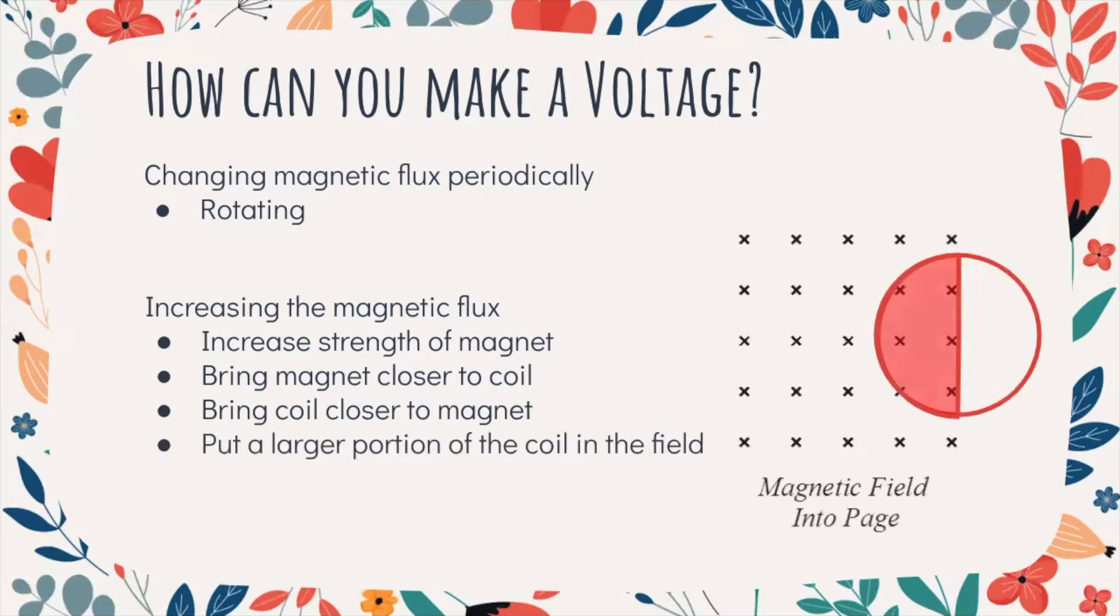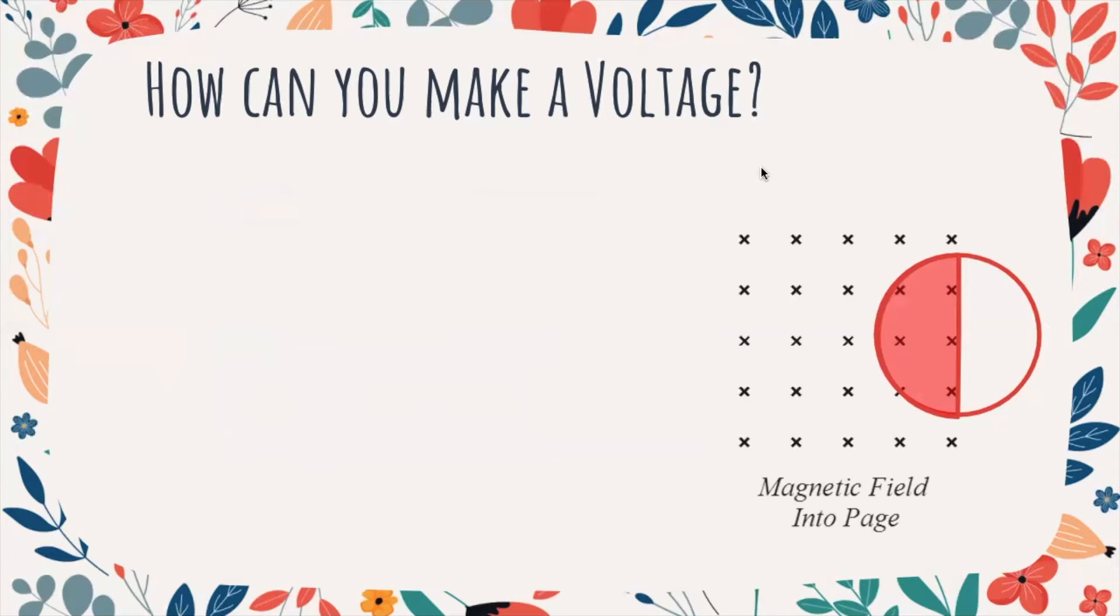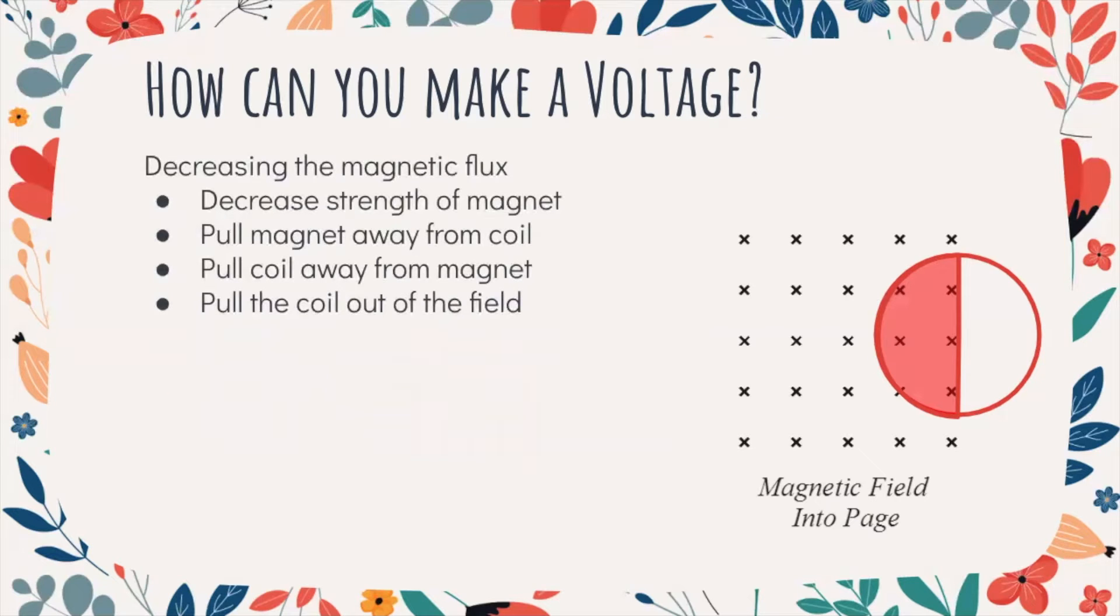When you put a larger portion of the coil in the field, imagine you're taking this coil and moving it to the right. So now it goes from having half a circle's worth of flux to a whole circle's worth of flux. That would make more flux and create a voltage, because your flux increased. But same thing happens. If you can increase the magnetic flux and create a positive voltage, if you decrease the magnetic flux, you make a negative voltage. Which you can do by any of the opposite means. So bring the coil farther away, bring the magnet farther away, make the magnet weaker. Pull the coil out of the field. So instead of the coil being half in, if I put the coil over here, now the flux has decreased. And that creates a voltage too.